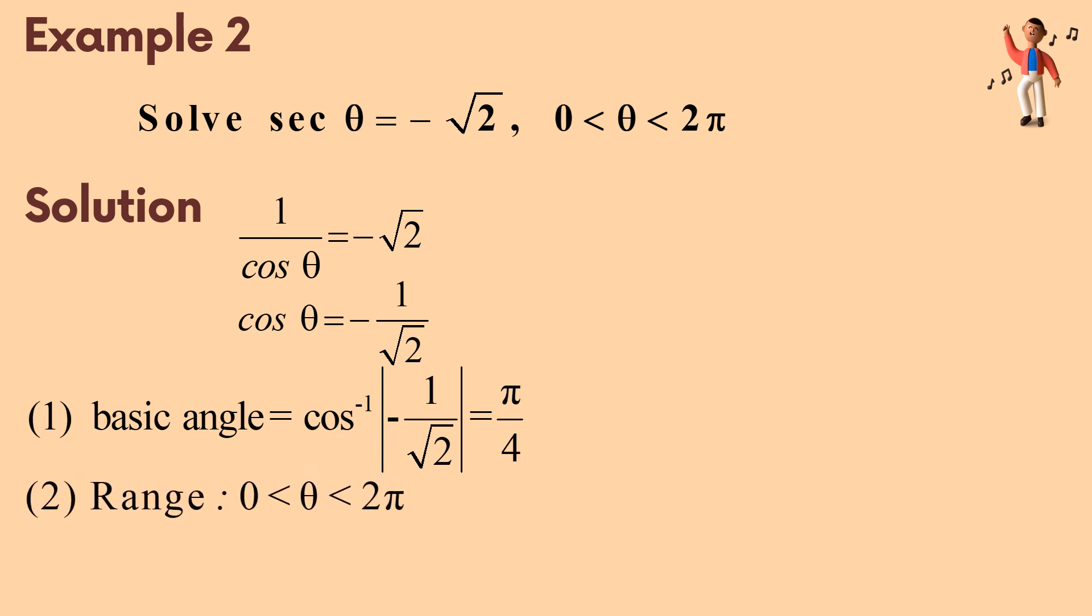Secondly, find the range. Thirdly, theta lies in second and third quadrants. From the diagram, we can see that the basic angle lies in second and third quadrants.